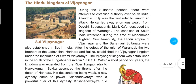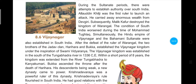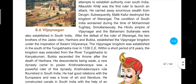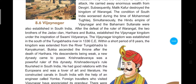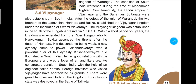Within a short period of eight years, the kingdom expanded from the Tungabhadra to Kanyakumari. After Harihar's death, his brother Bukha ascended the throne; after him the descendants were weak, so a new dynasty came to power. Krishnadev Rai was a powerful ruler of this new dynasty who flourished south India and had good relations with Europeans, being a lover of art and literature.